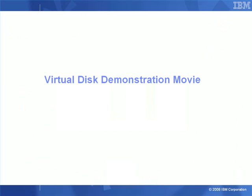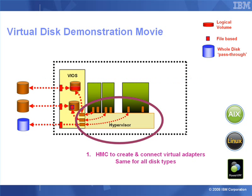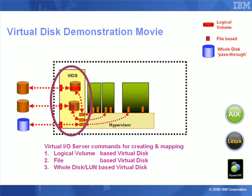In the next movie about virtual disks, we're going to demonstrate how we actually set up our virtual disks using our virtual I/O server. On the HMC — the Hardware Management Console — we create these virtual SCSI adapters, both in the client and in the virtual I/O server, and we connect up those virtual adapters so that the I/O will actually transfer between the server and client logical partitions. These connections are all exactly the same regardless of what underlying disks are involved. In the second part, we'll look at creating the disks and the mapping of those disks for the logical volume-based, file system-based, and whole disk or LUN-based virtual disks.